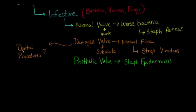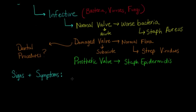Now let's talk about the signs and symptoms associated with mitral stenosis. These may be based on the mechanism or how it was caused — so if you have something like endocarditis as a result of an infection, the person may have typical signs of infection like fever, chills, and elevated white blood cell count. But for signs and symptoms of mitral stenosis specifically, we're going to talk about signs and symptoms relating to the heart and cardiac physiology.